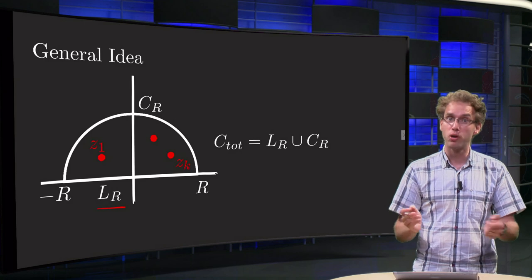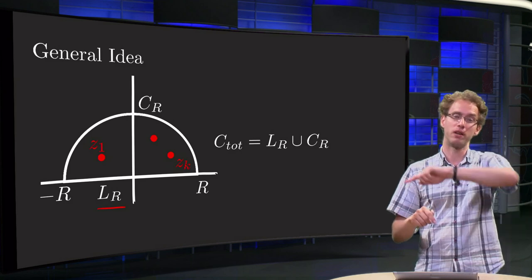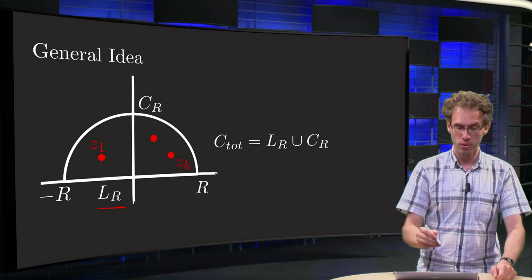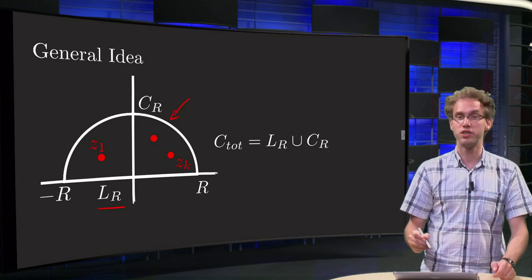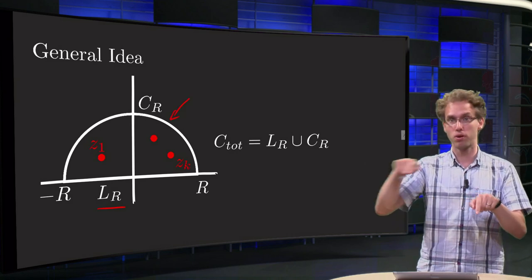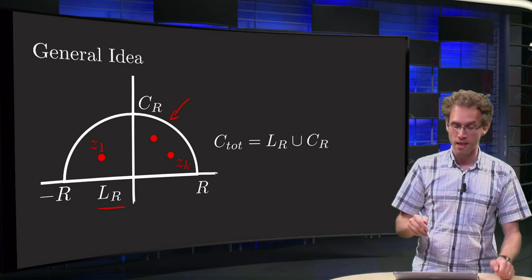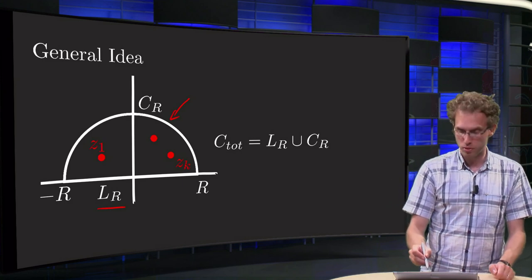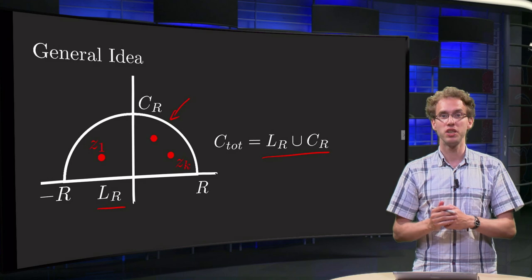We will have to close that contour. We can go up or we can go down. In this example I put it up, CR, so we get some closed contour. And our total contour will be called LR joined with CR.